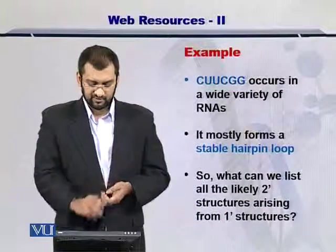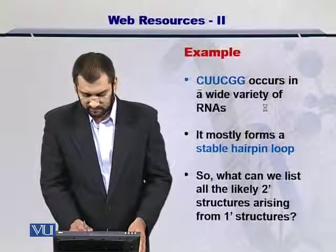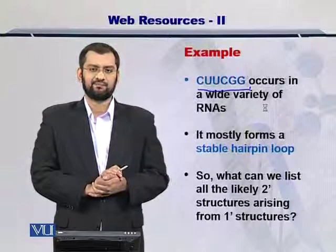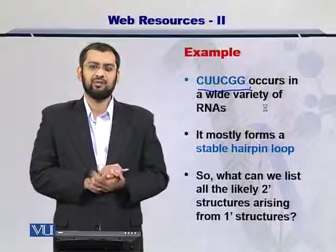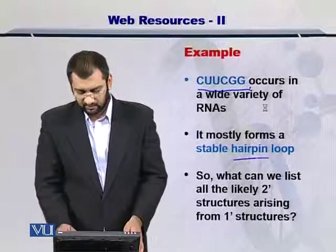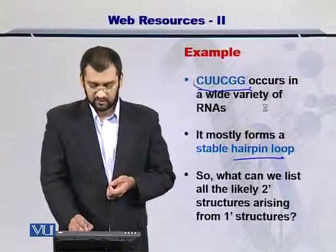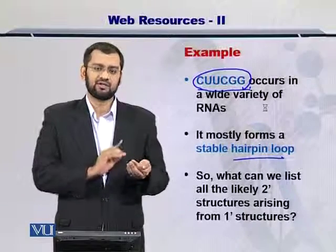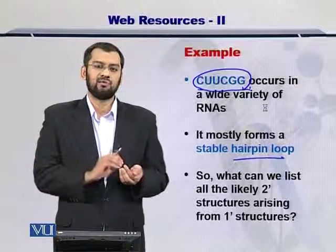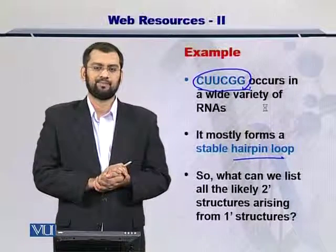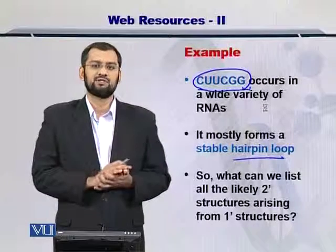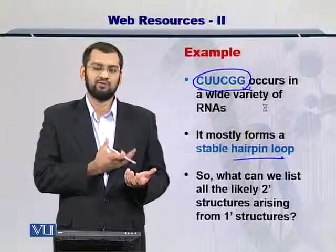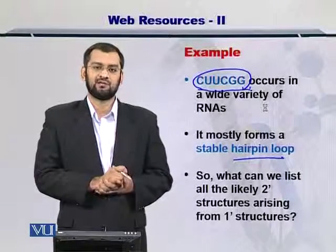As an example, I have a sequence here for you: C-U-U-G-G-C-G-G. It occurs in a wide variety of RNA, and it always forms a hairpin loop. So if you have this sequence in your primary structure, then you may want to label the secondary structure possible from this sequence as a stable hairpin loop as well. If you have more such sequences, you can arrive at the secondary structure from an unknown sequence by looking at the trends that exist in nature.